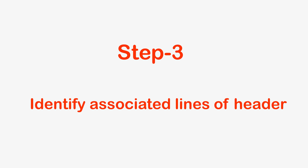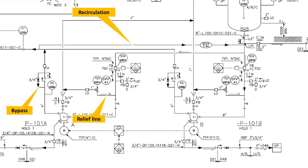Step 3: Identify associated lines of the supply and discharge. We have identified the supply and discharge lines of an equipment in Step 2. Now it's time to identify all the associated lines of those supply and discharge lines. It could be a bypass line, a recirculation line, or a line going to a PSV.